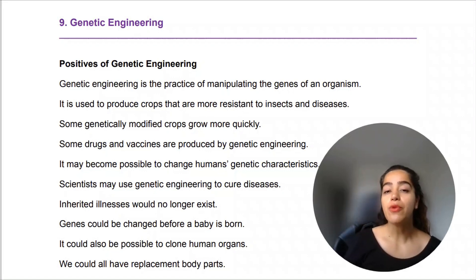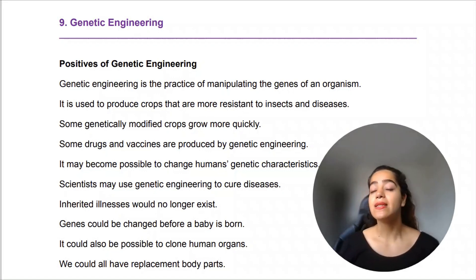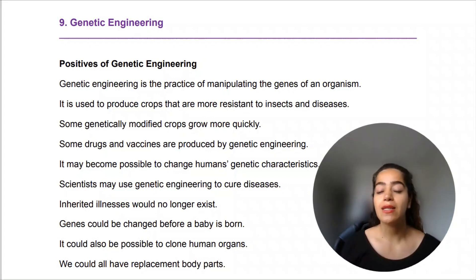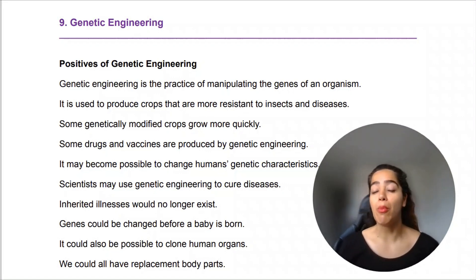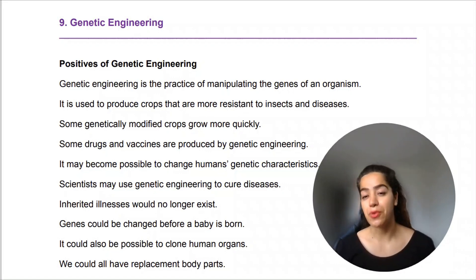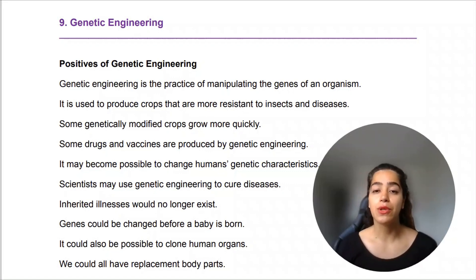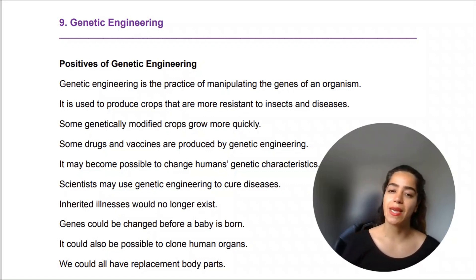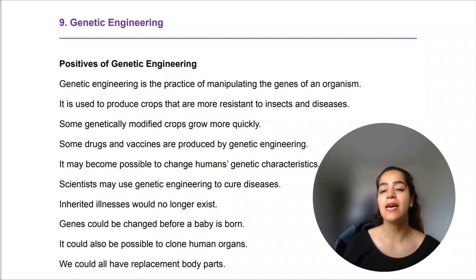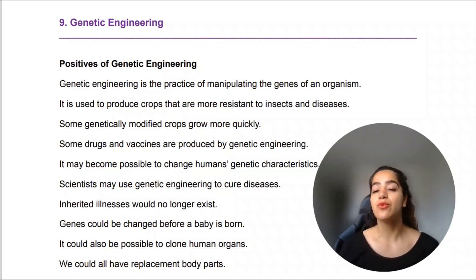Some genetically modified crops grow more quickly, and sometimes producers do that because they can earn money much faster compared to naturally grown produce. Some drugs and vaccines are also produced by genetic engineering.